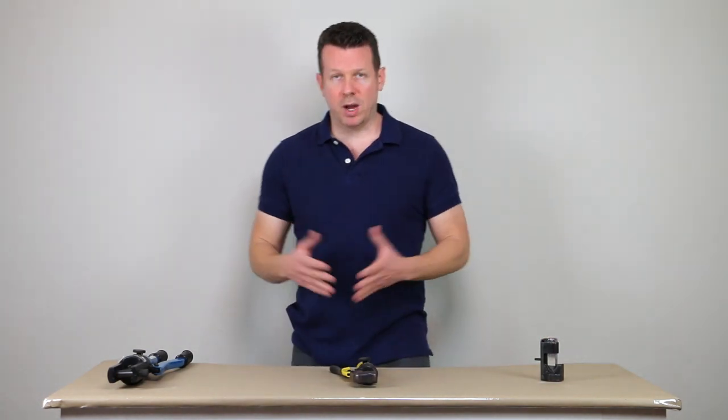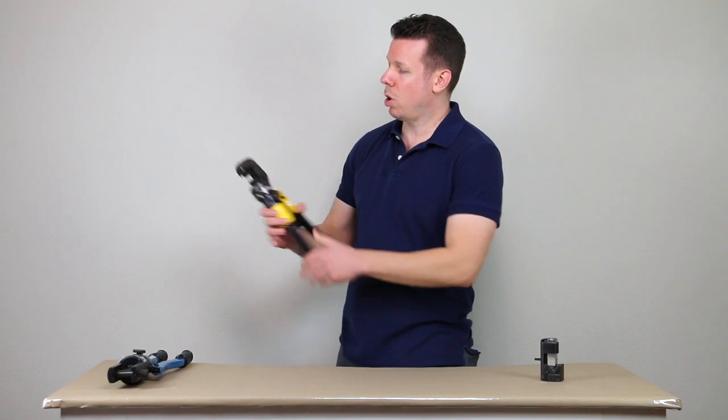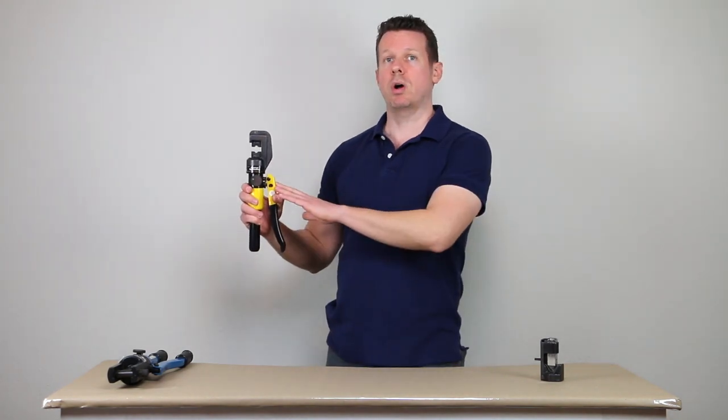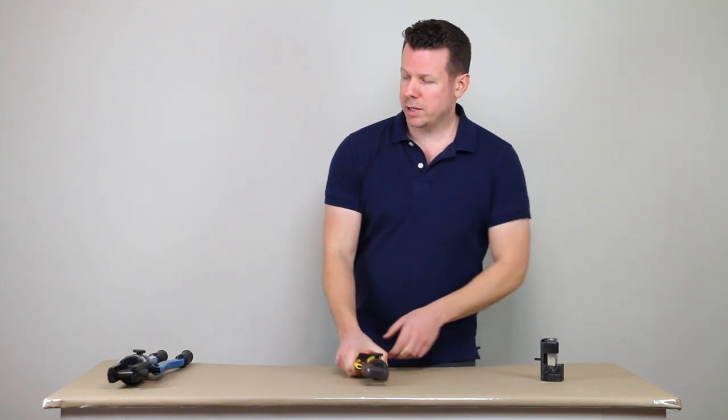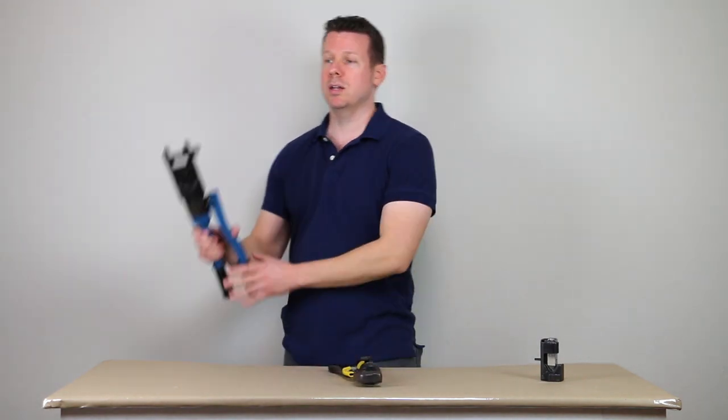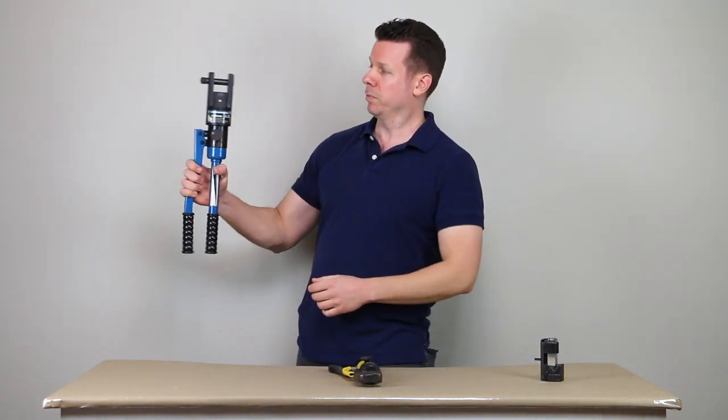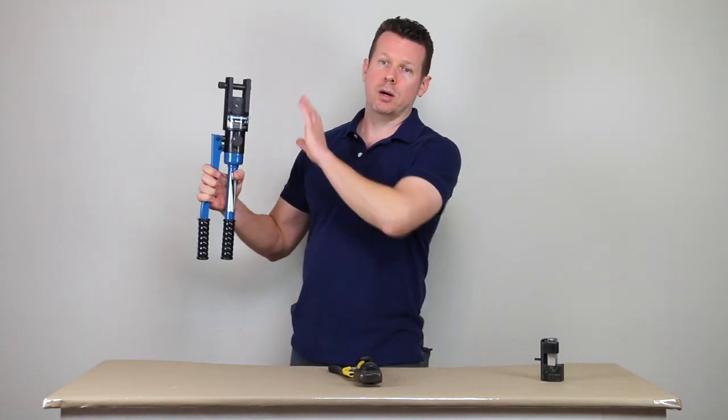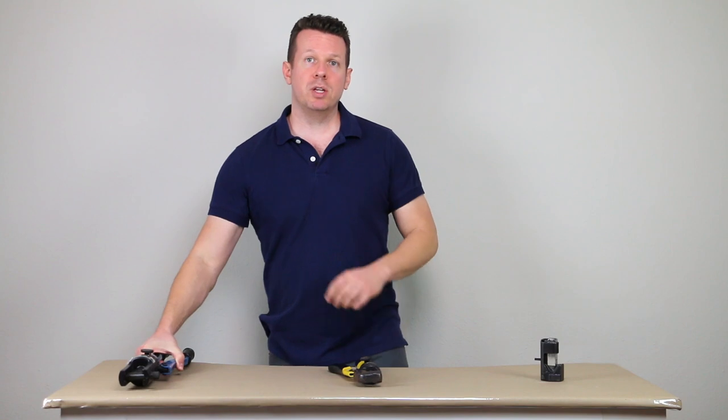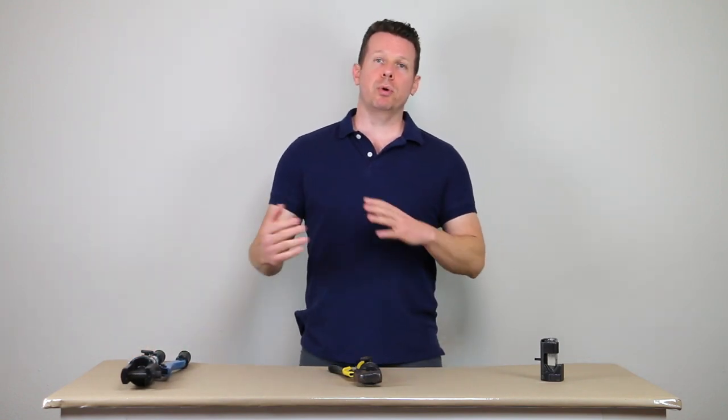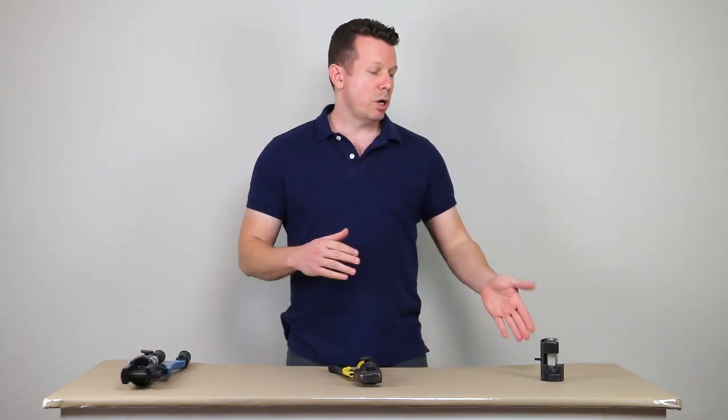And then over here we have a couple of hydraulic crimpers. We've got the smaller five ton central hydraulics crimper from Harbor Freight Tools. And then next up we have the Timco industrial 11 ton crimper, which is going to crimp the largest cables out of the three. But I wanted to do a demo of each crimper and talk about the pros and cons of each type, starting with the lug terminal crimper or the hammer crimper.